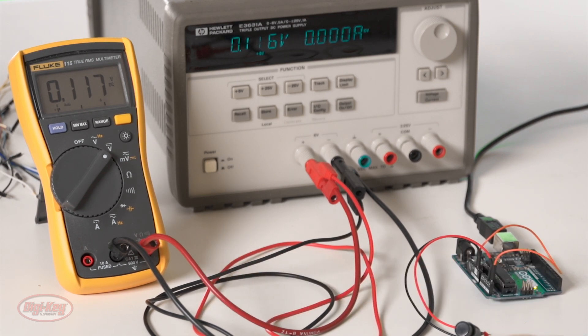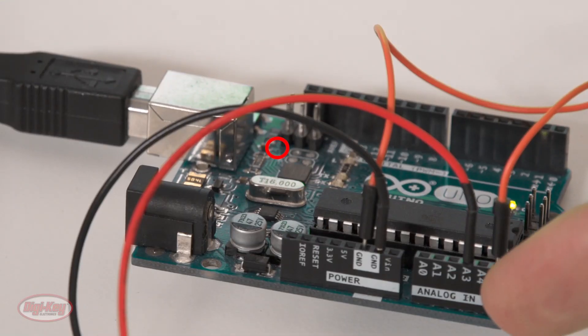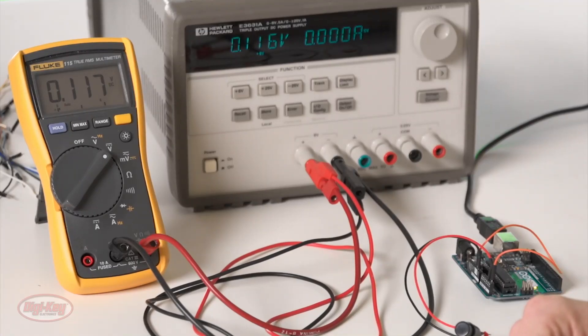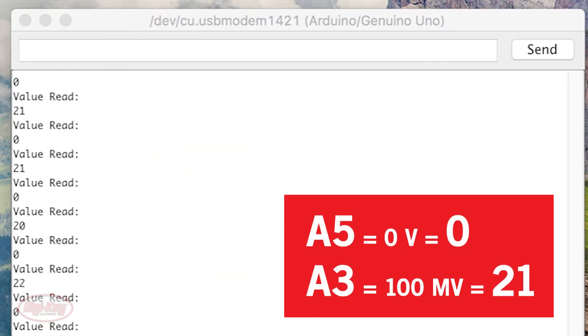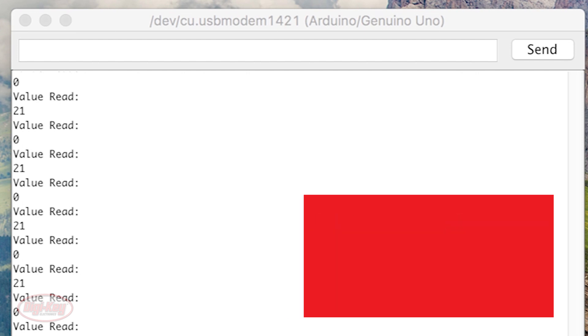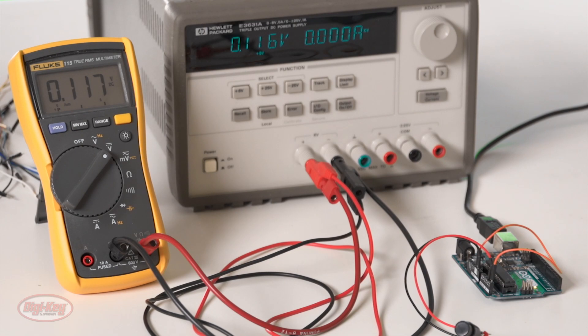To alternate inputs on the Arduino, I just changed the pin number I'm reading. So I used A3, and I also have A5, and as you're looking at the screen, you'll see it's going between 0, which A5 is connected to ground, and 21, which is connected to 100 millivolts. And so that is taking those readings sequentially.